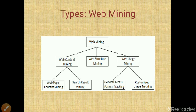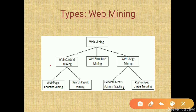Web mining is classified into mainly three types: web content mining, web structure mining, and web usage mining. In web content mining there are two subtypes: web page content mining and search result mining. In web usage mining, the subtypes are general access pattern tracking and customized usage tracking.